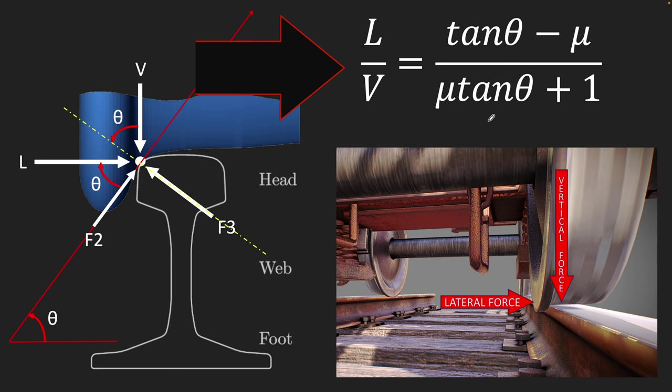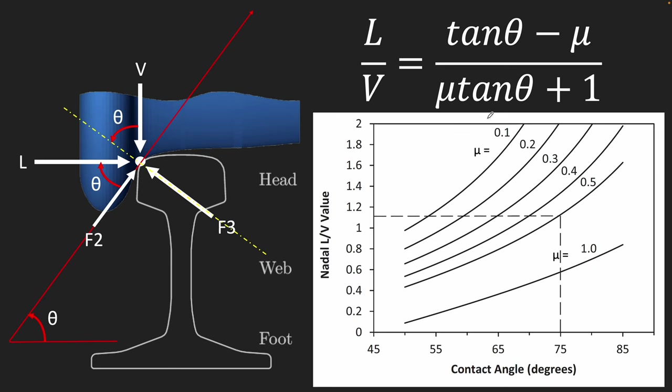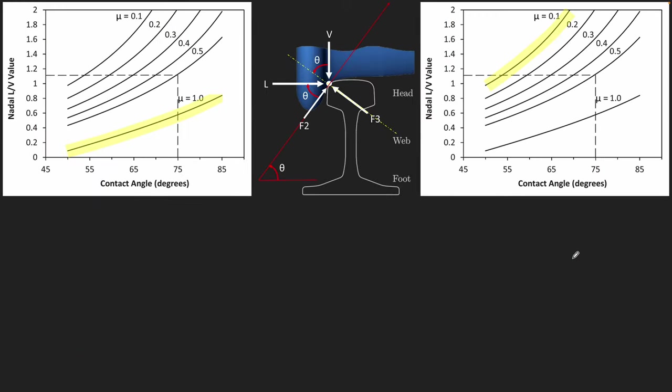But to extract some interesting conclusions, let's plot this equation on a graph. This is the L/V value. This is the contact angle, which is theta. Mu is the coefficient of friction. This gives us a bit more understanding.